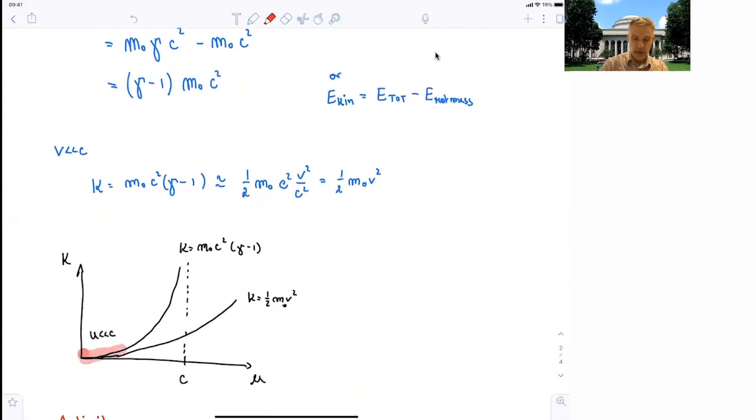For small values, m0 c squared times gamma minus 1 is basically the same as 1/2 mv squared, which is just derived here from the Taylor expansion. But for larger values, this diverges, and especially when you get closer to the speed of light.